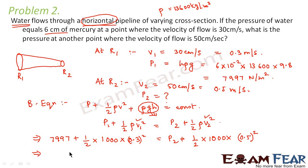Now from this equation, we find that P2 comes out to be 7917 newton per meter square. So this is the value of pressure at the point R2.